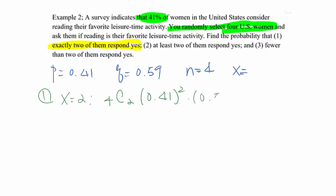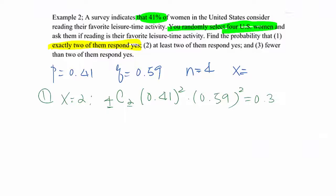And 0.59, now 4 minus 2 equals 2, so that will be to the second power. If you calculate that, you will get 0.3511 like this.